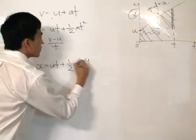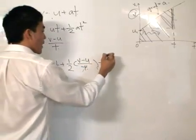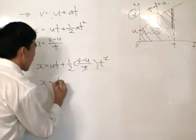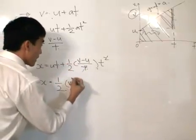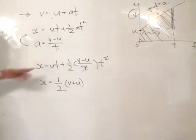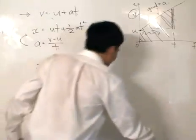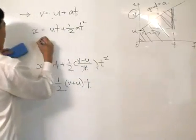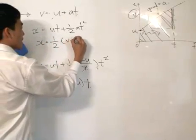Cancelling the t terms, we get x = ½(v + u)t. So our third equation is: x = ½(v + u)t.